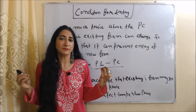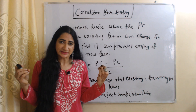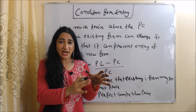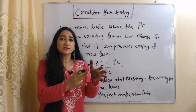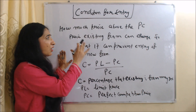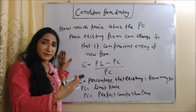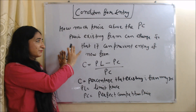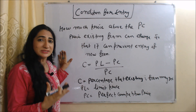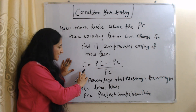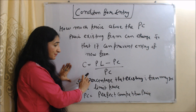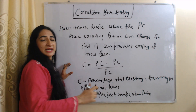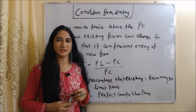This model also talks about the condition for entry. According to this model, existing firms charge a price lower than monopoly and higher than perfect competition — the limit price. The condition for entry tells us how much above the perfect competition price the existing firm can charge so that they can prevent the entry of new firms. The formula for calculating this is: C = (PL - PC) / PC, where C is the percentage that the existing firm may get up, PL is the limit price, and PC is the perfect competition price. That is all about Bain's model of limit pricing.